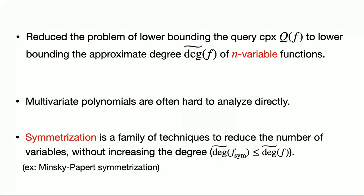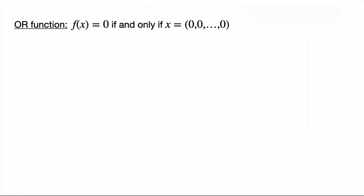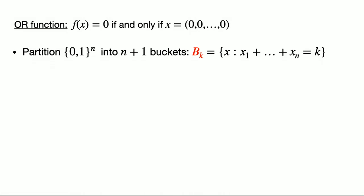Let's see how this symmetrization technique works on the OR function. The construction partitions the hypercube into n+1 buckets B_k, where each bucket contains all n-bit strings with the same Hamming weight. So B_0 is just the all-zeros string, and increasing k increases the Hamming weight.